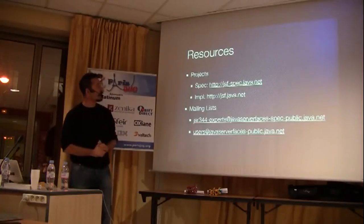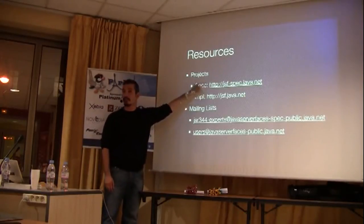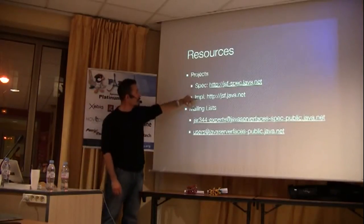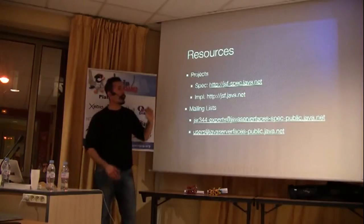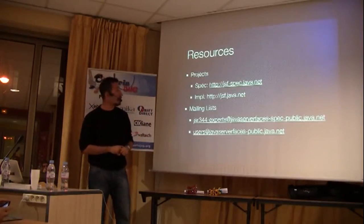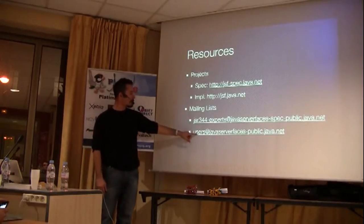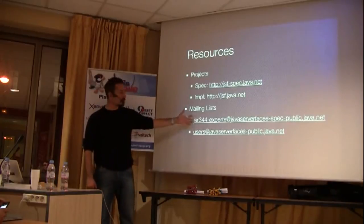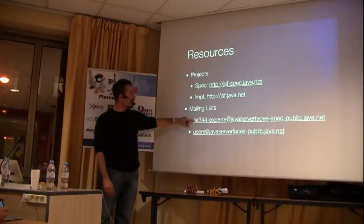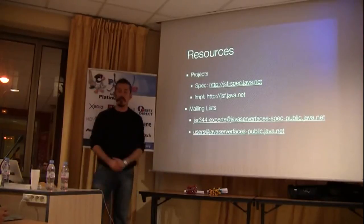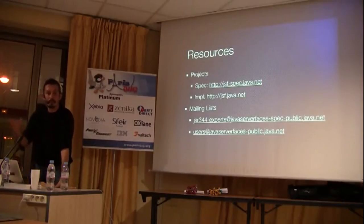So finally, the resources. If you'd like to monitor what's going on in JSF 2.2 — this is the spec. Also, the issue tracker is here, so you can see what issues and changes will be in JSF 2.2. And this is the implementation where you can download the JAR and start playing with it. Right now in the current implementation, we have basic Faces Flows implemented and HTML5 stuff as well for rendering, but not other stuff. This is the mailing list of the expert group, and this is the users list. Whenever someone posts here, it will also be copied here. So in case you'd like to get involved with JSF, this is the way. That was my part on JSF 2.2. Any questions?